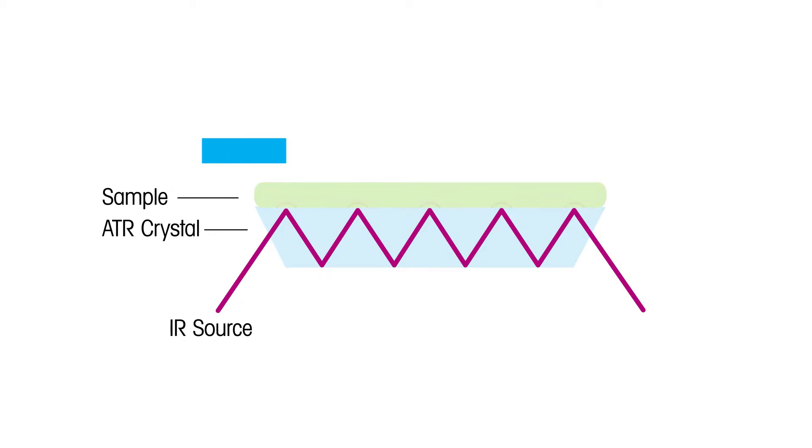Information about the sample is gathered through the interaction of an evanescent wave and the sample. This evanescent wave is a standing wave that occurs at inflection points of the propagating light. After interaction with the sample, it carries the chemical information along with it to the detector.